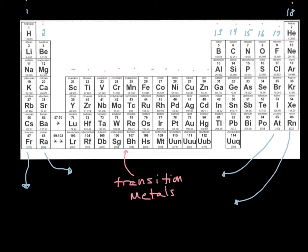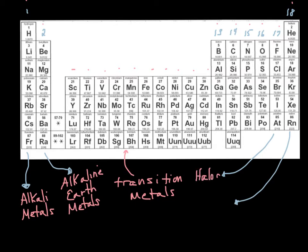So group 1 here are called the alkaline metals. Group 2 are the alkaline earth metals. Alkali and alkaline is the same as basic, so these things tend to make basic solutions as opposed to acidic solutions. The second-to-last group, the 17, are called the halogens. And the last group, of course, are called the noble gases. So let's talk about each of these groups a little bit more.